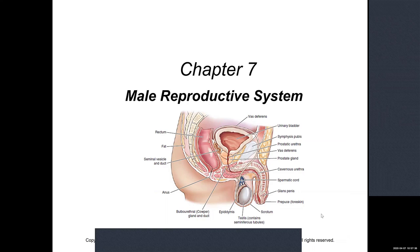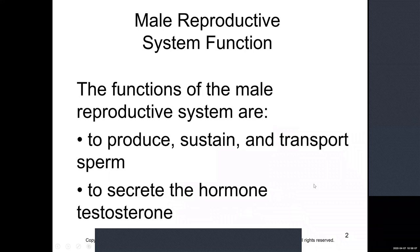Some of this is going to be crossover from the urinary chapter, just because the urethra and the penis share functional use with the urinary system as well as the male reproductive system. We'll look at this picture a couple of times as we move through, so I'm not going to pause on it here.